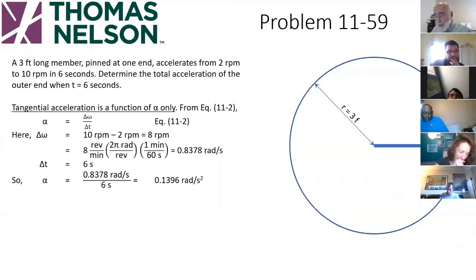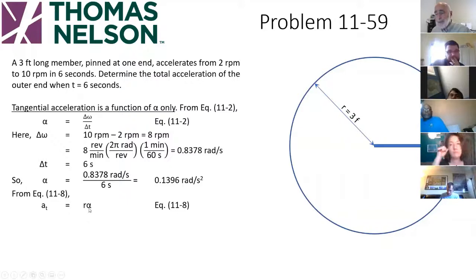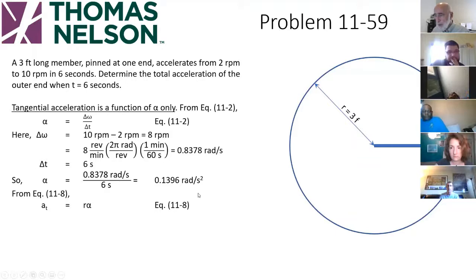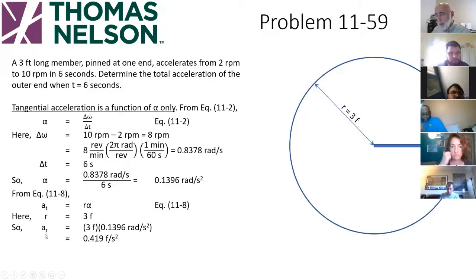Just like velocity, tangential acceleration is equal to the radius times the rotational acceleration. So all we're doing is multiplying the rotational acceleration times R, which is 3 feet. AT is equal to 3 feet times alpha, and we get a number for the tangential acceleration.